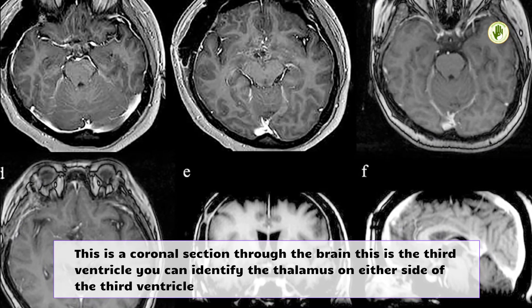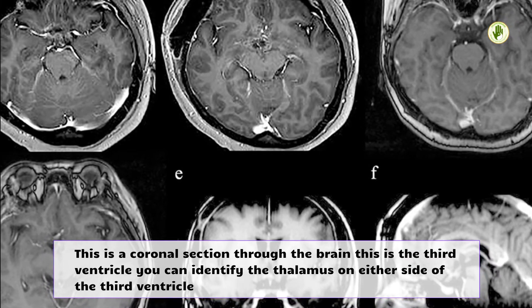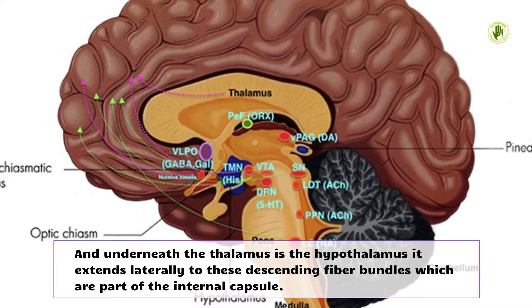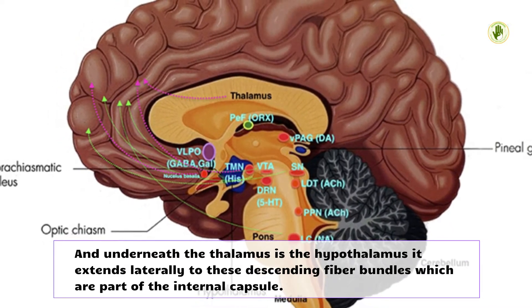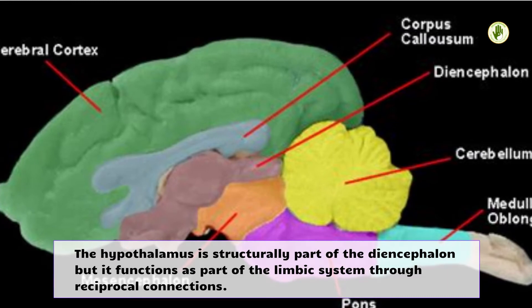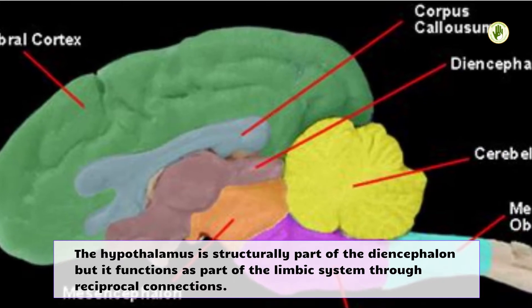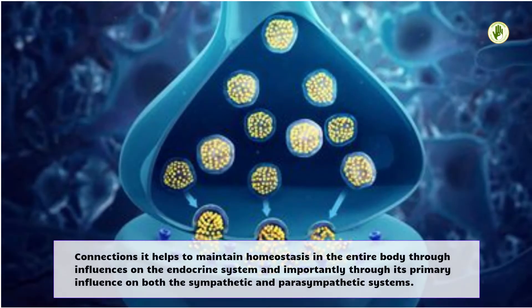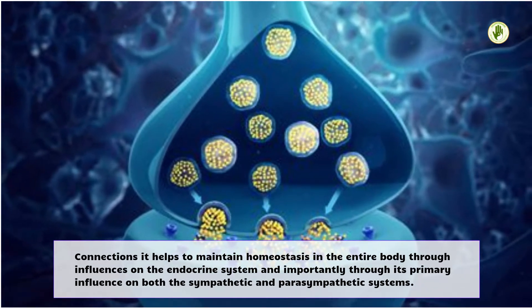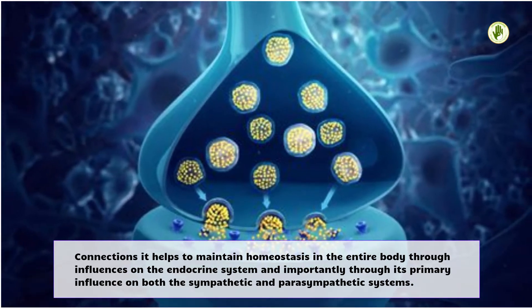This is a coronal section through the brain. This is the third ventricle; you can identify the thalamus on either side of the third ventricle. Underneath the thalamus is the hypothalamus, which extends laterally to these descending fiber bundles that are part of the internal capsule. The hypothalamus is structurally part of the diencephalon but functions as part of the limbic system through reciprocal connections. It helps maintain homeostasis in the entire body through influences on the endocrine system and through its primary influence on both the sympathetic and parasympathetic systems.